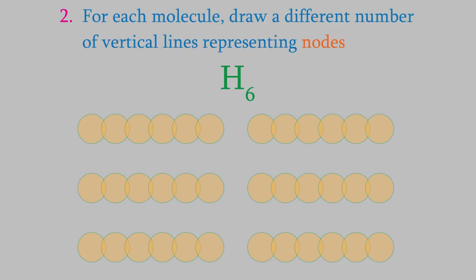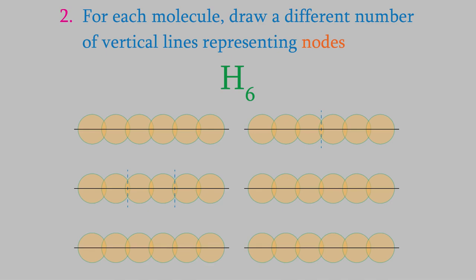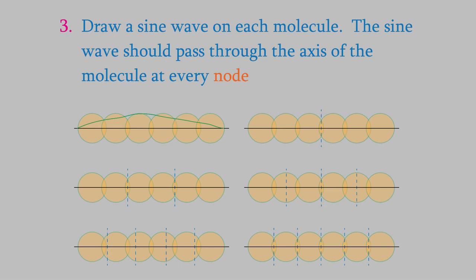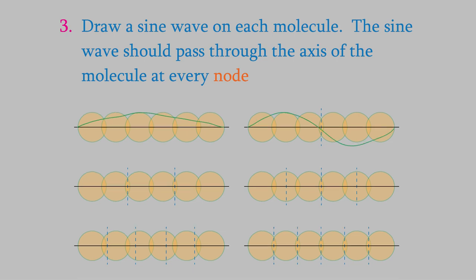In step two, we draw vertical lines in each picture to represent the location of nodes in the molecular orbitals. The first picture will have no nodes. The second will have one node, which will divide the molecule into two halves. The next will have two nodes, so we draw two vertical lines that divide the molecule into thirds, and so on. In the third step, we draw a sine wave over each molecule. The first molecule has no nodes, so the sine wave starts at the left end, rises, and then meets the axis again at the right end. In the second molecule, the sine wave rises, passes through the axis at the node, and returns to the axis at the end of the molecule, and so on.